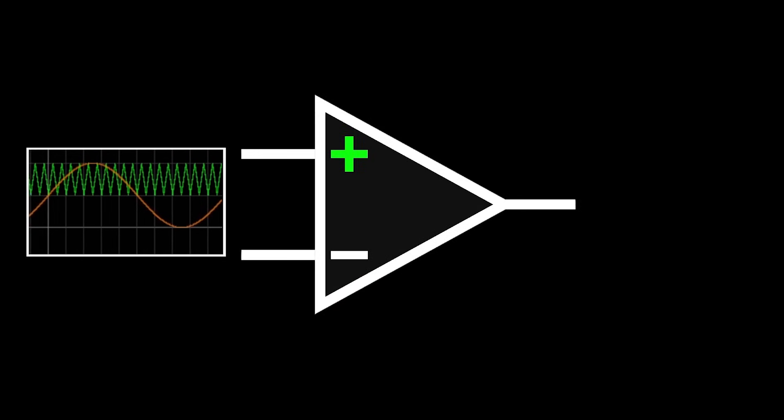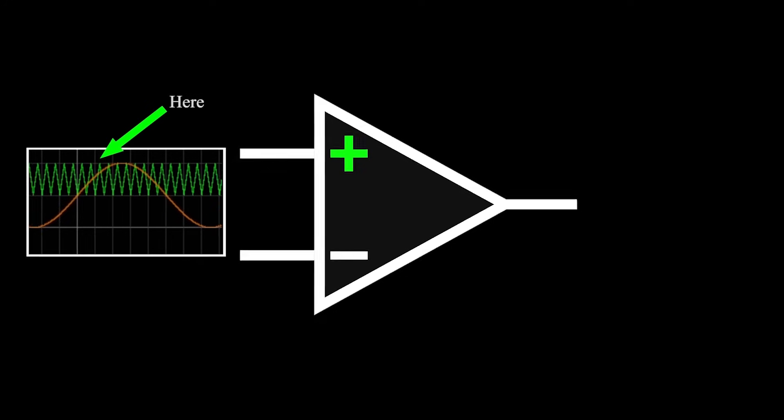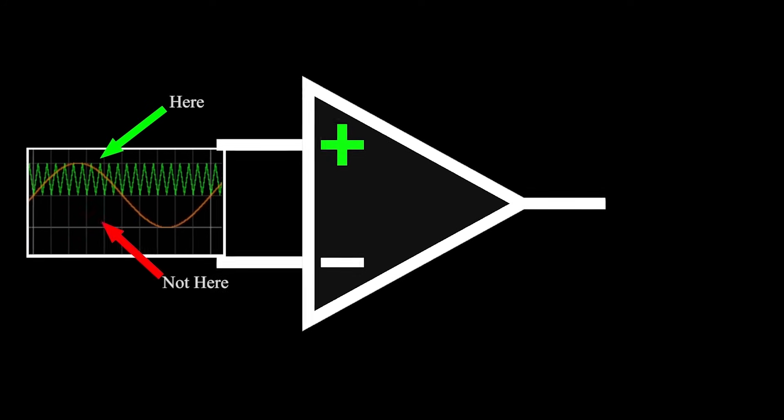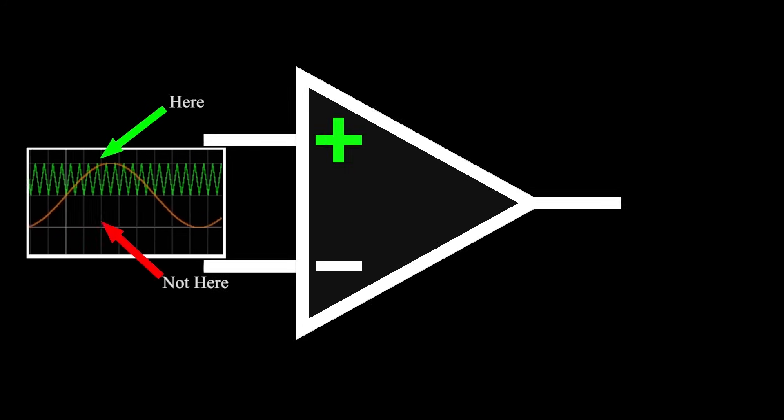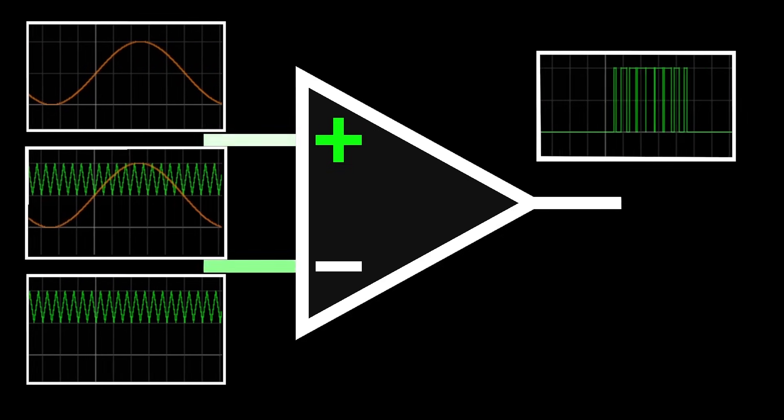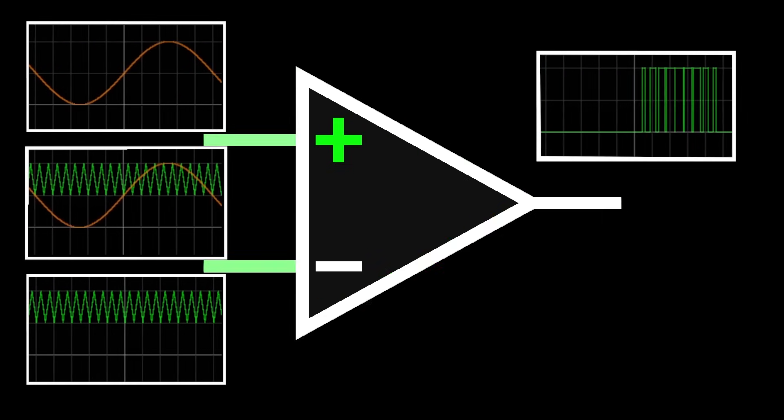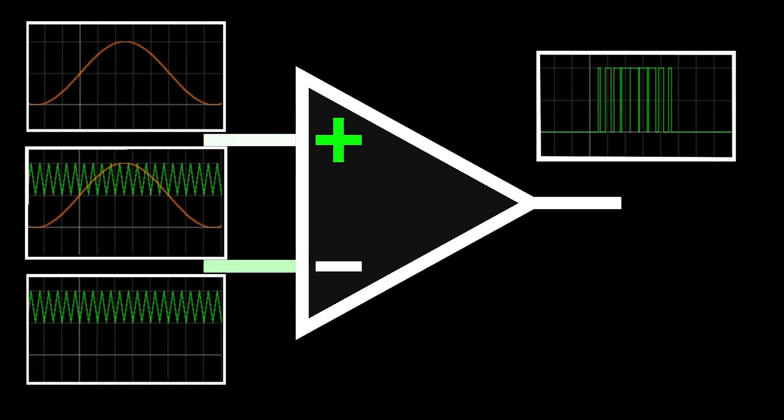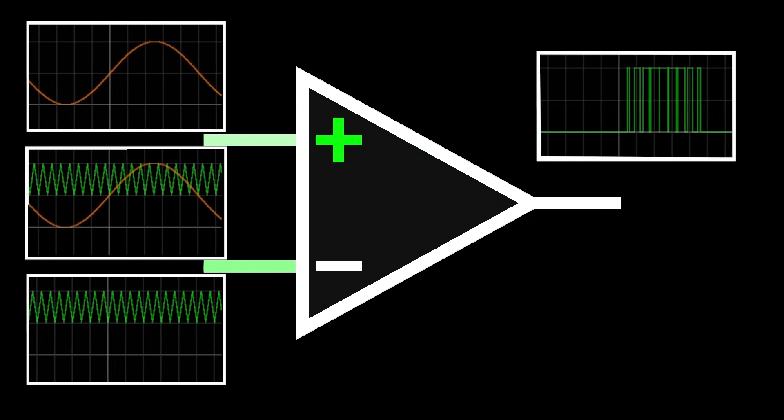Now, we want the output of this comparator high when the sine wave is above the triangle wave, and low when the sine wave is below the triangle wave. Hence, we connect the sine wave to the positive, or non-inverting input, and the triangle wave to the negative, or inverting input of the comparator.